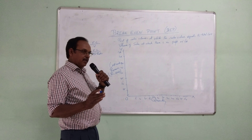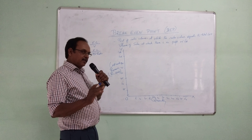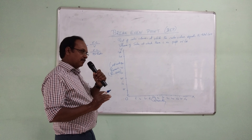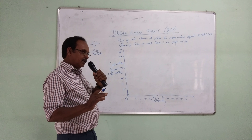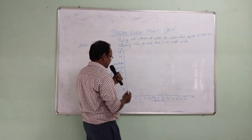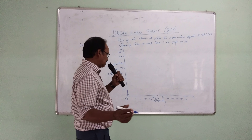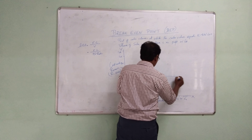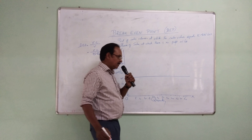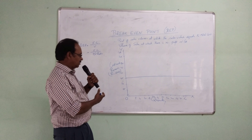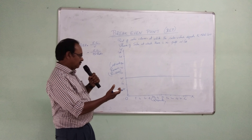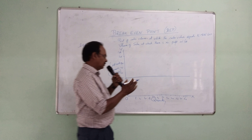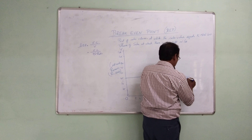Let us now begin with the fixed cost. The fixed cost will remain the same whatever may be the units or quantity of production. Let me take the fixed cost as 45,000. That means at zero level of production it is the same — at 30,000 units or any level it remains the same. This is called the fixed cost.